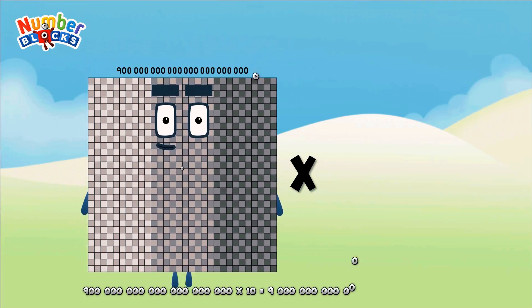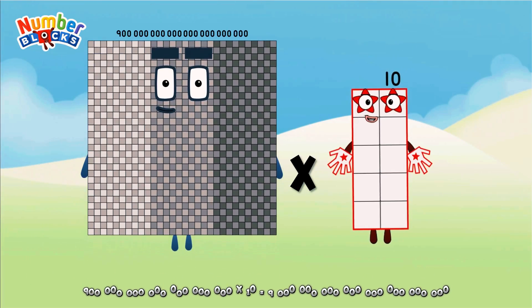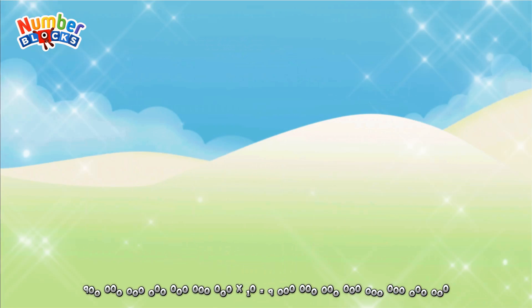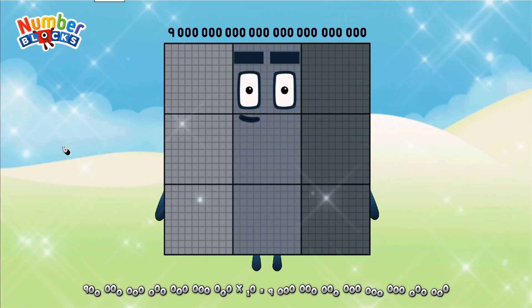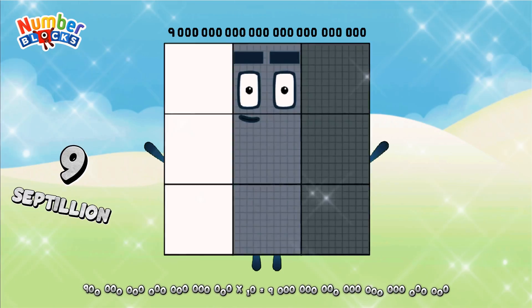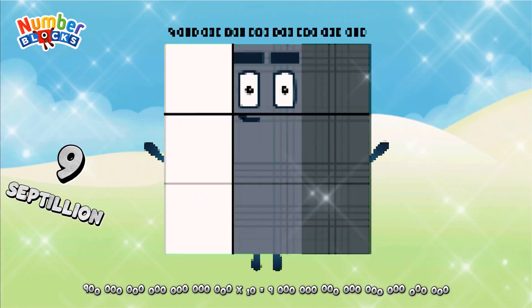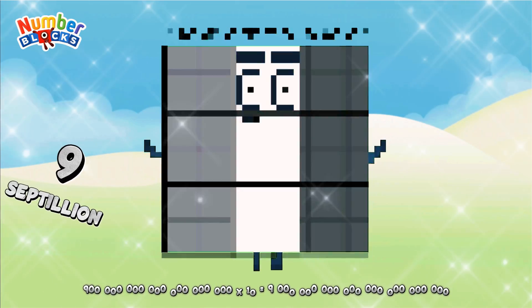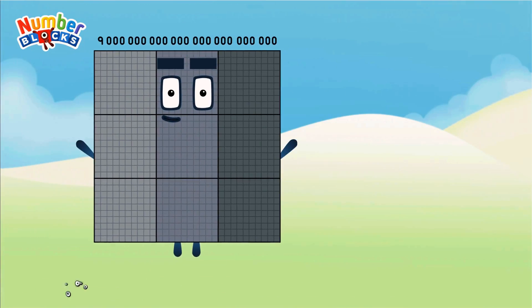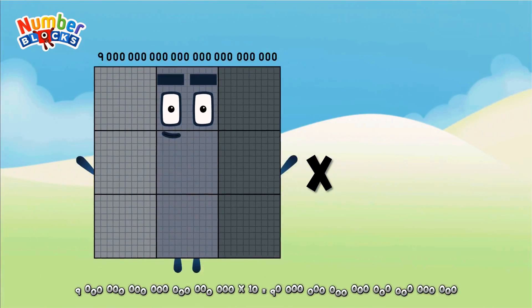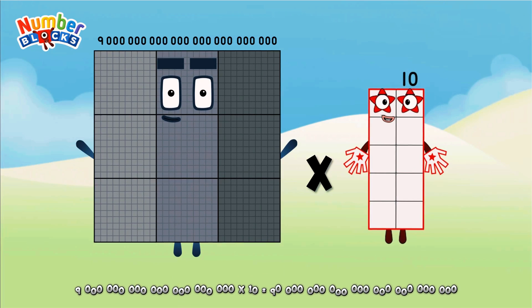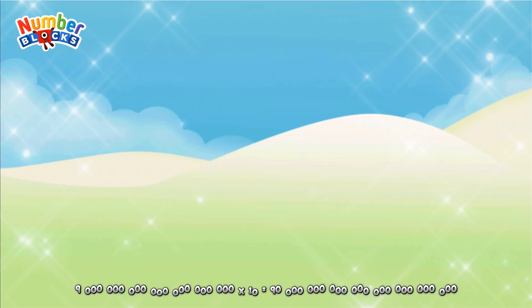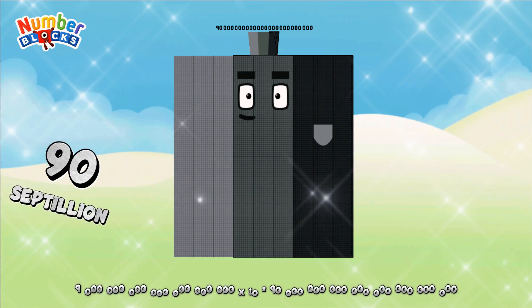Nine hundred sextillion, multiplicated by ten, equals nine septillion. Nine septillion, multiplicated by ten, equals ninety septillion.